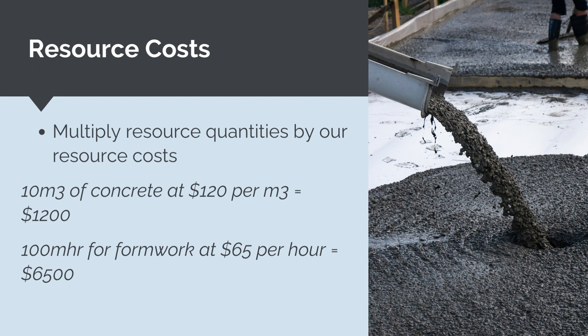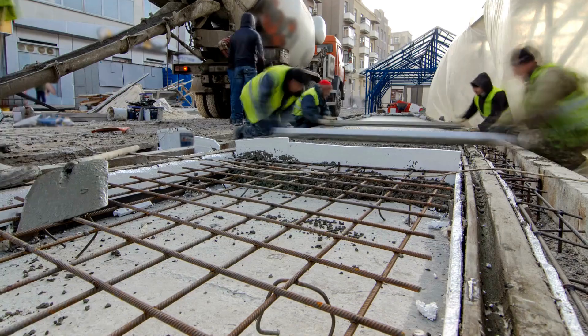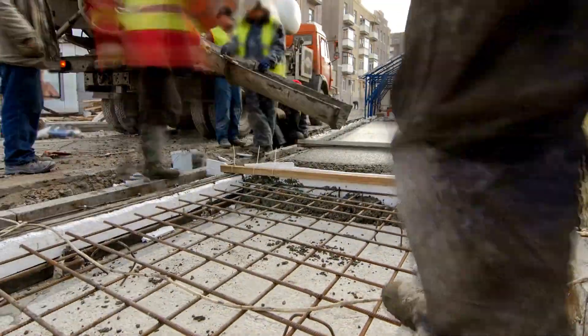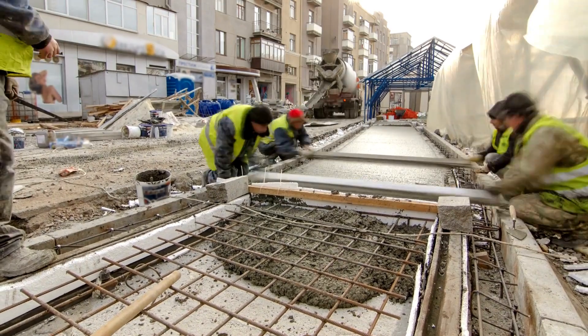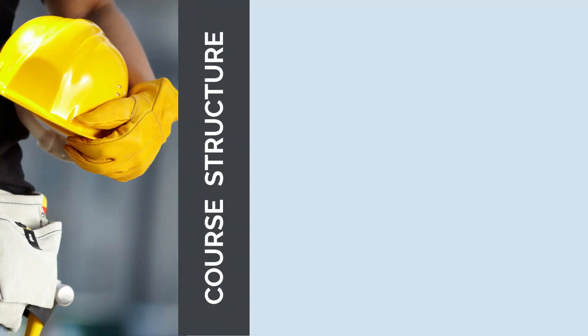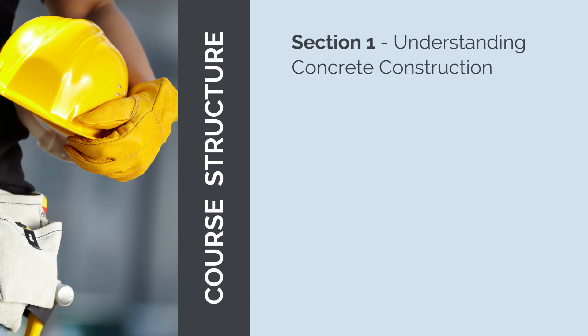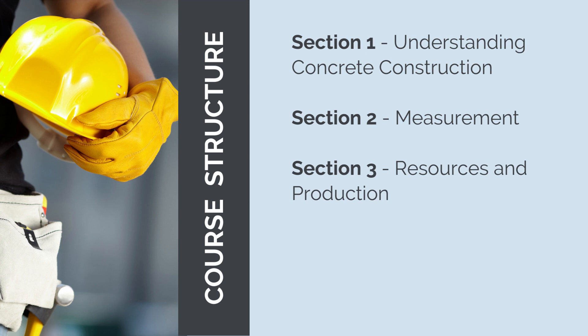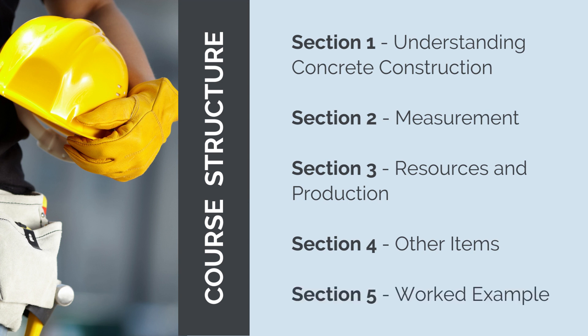We can then simply sum all of these together to get our total activity costs. The basic process of estimating is actually incredibly easy and intuitive — the hard part is coming up with accurate quantities and production rates. Our course structure focuses on these key items for concrete works: Section 1 covers understanding concrete construction; Section 2 covers accurately identifying and calculating key quantities; Section 3 covers resources, production, and key productivity rates; Section 4 covers indirect costs and risk and opportunities specific to concrete works; and Section 5 is a fully worked example applying this knowledge to a real-world concrete cost estimating scenario.